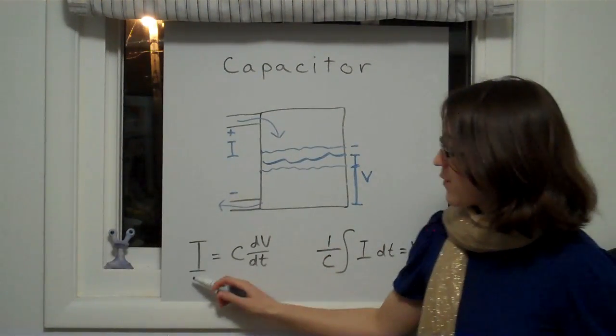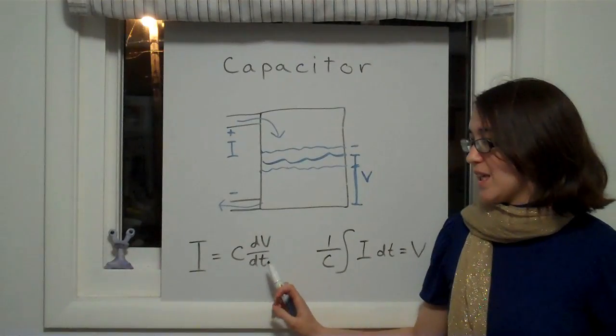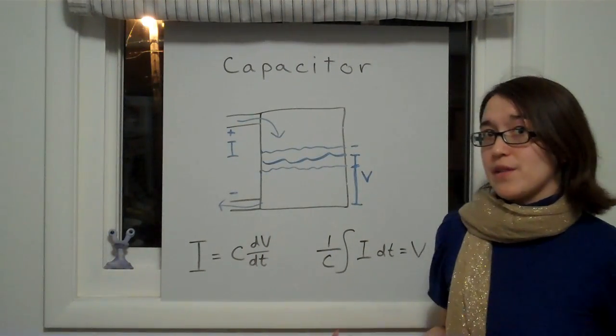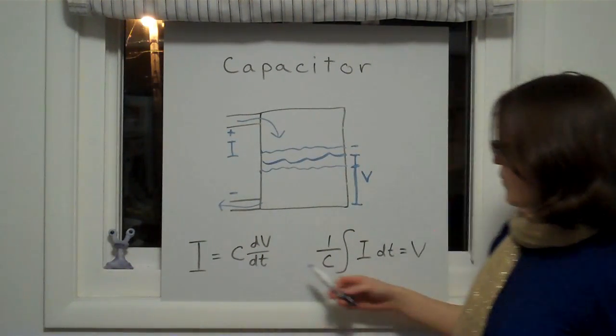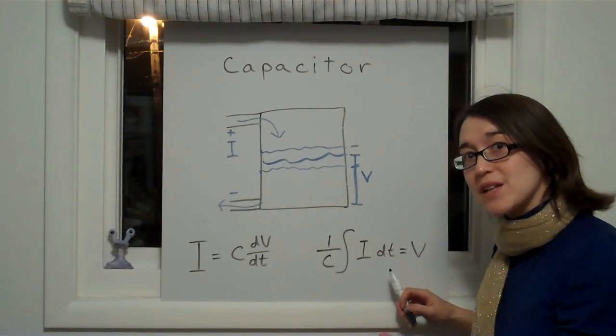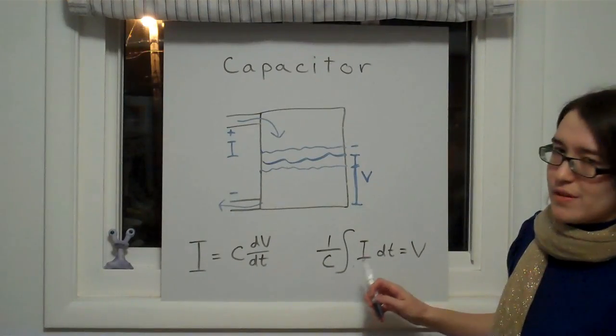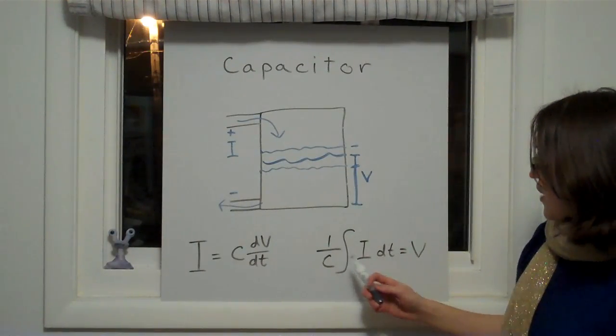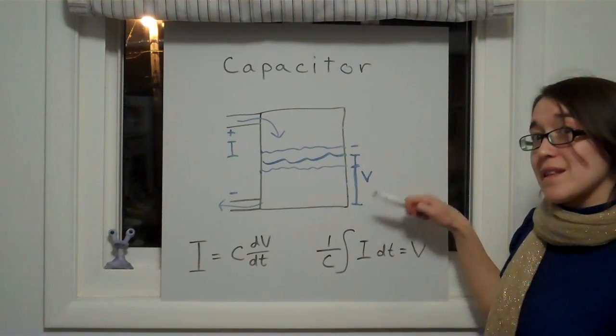This can be rewritten in equation form as I equals C dV/dt, and this is the governing equation for a capacitor. It can also be rewritten in an integral form, and think of this as the total amount of current that you put into the capacitor times the 1 over C factor is equal to the voltage level that it's at.